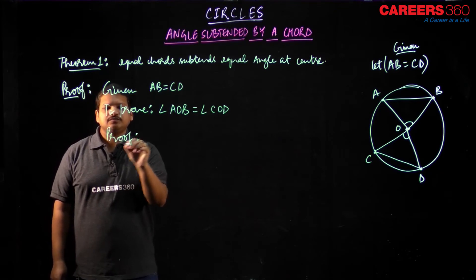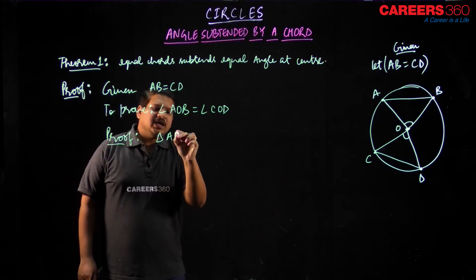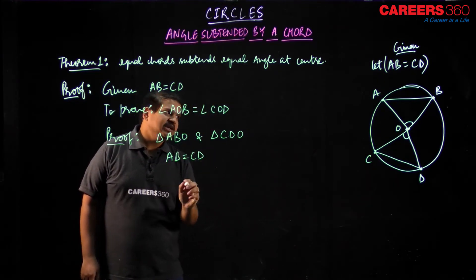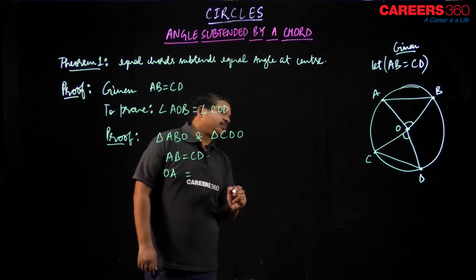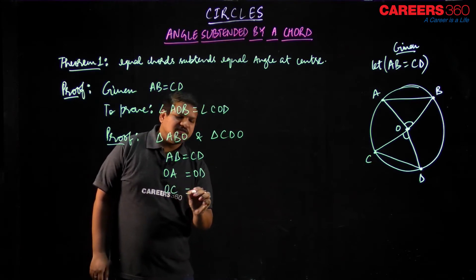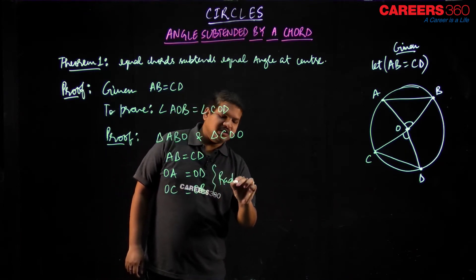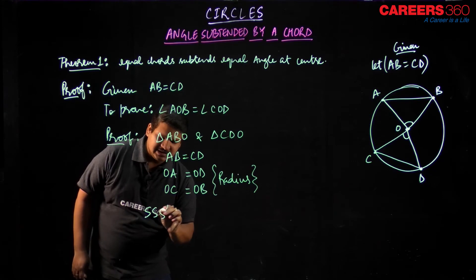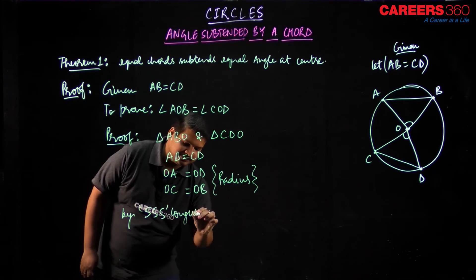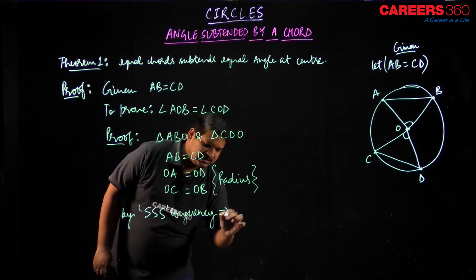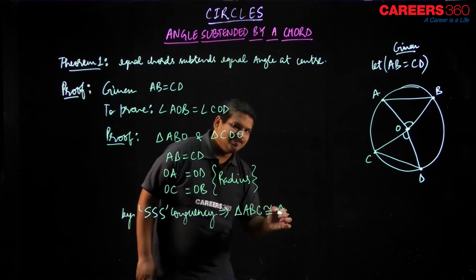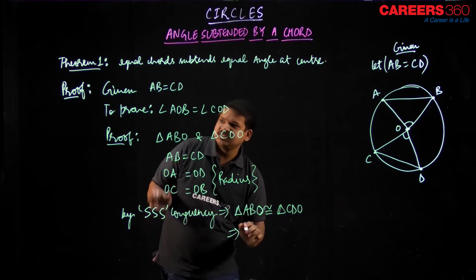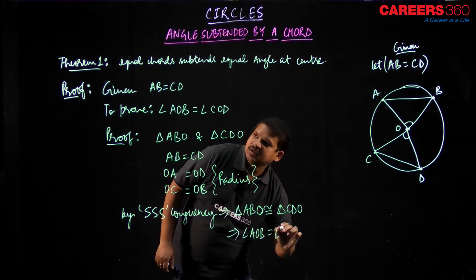Now let us try to prove this. If I look upon triangle ABO and triangle CDO: AB equals CD, OA equals OD, and OC equals OB — because these are nothing but radii. Since all three sides are equal to each other, by SSS congruency, triangle ABO is congruent to triangle CDO.